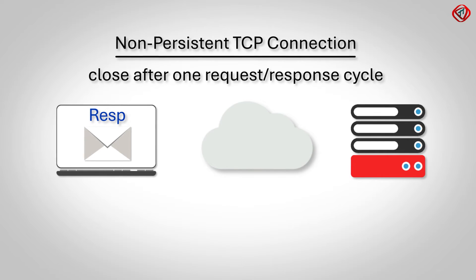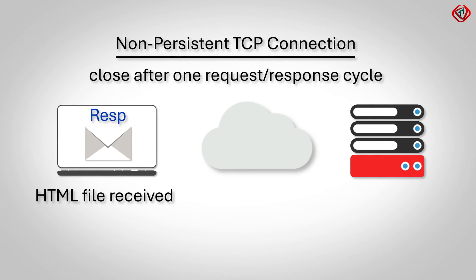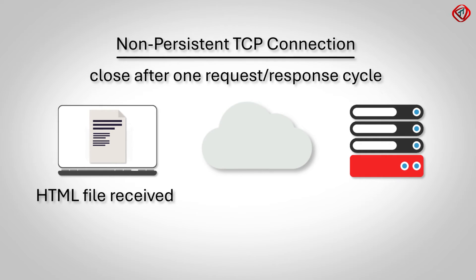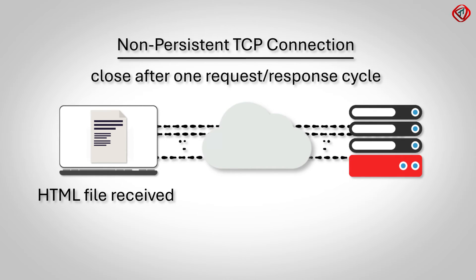The HTTP response message indicates that the data it contains is an HTML file. The web browser extracts the HTML file and reads it. The HTML file has URLs for 10 images. Since this is a non-persistent connection, 10 distinct TCP connections are set up for requesting the 10 images.